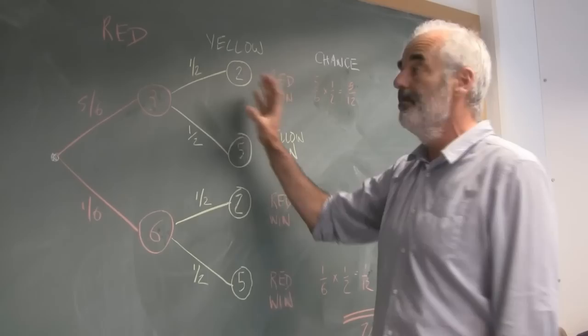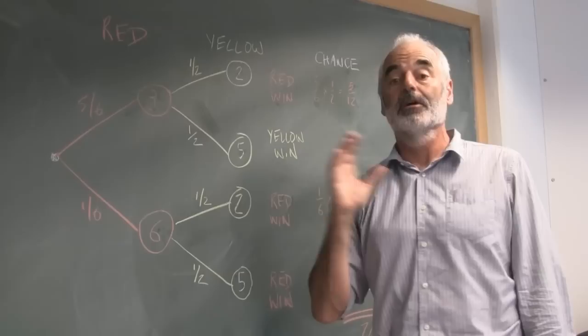Now, so the chance of any one of these happening is the sum of these probabilities. We add them up, and we get 7/12. The important thing is that that's bigger than a half. So on average, red is going to beat yellow. We can do exactly the same to show that, on average, yellow will beat green. And then the rather remarkable thing is that we can do the same to show that, on average, green will beat red.